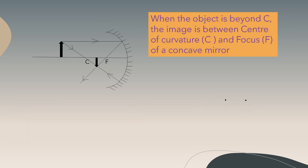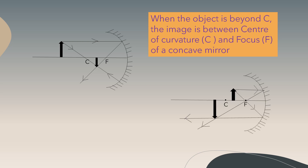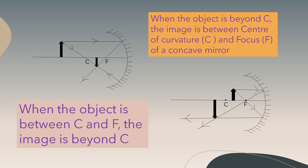Notice the difference: when the object is beyond C, the image is between the center of curvature and the focus. And when the object is between C and F, the image is beyond C.